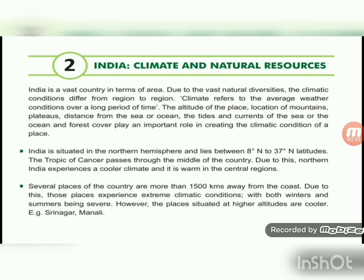India is situated in the northern hemisphere and lies between 8 to 37 degrees north latitudes. The Tropic of Cancer passes through the middle of the country. Due to this, northern India experiences a cooler climate and it is warm in central regions.